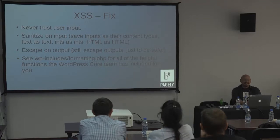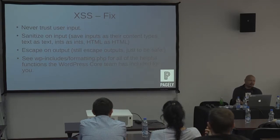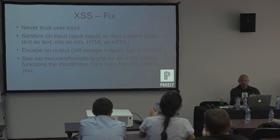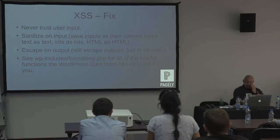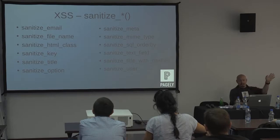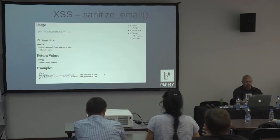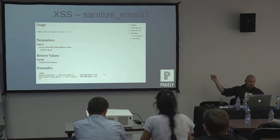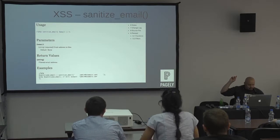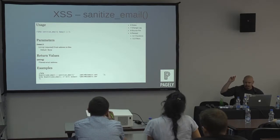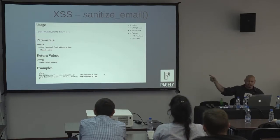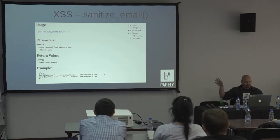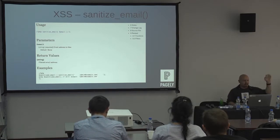You have to escape on output as well — it's better to be safe than sorry. WordPress has a fantastic suite of functions that help you escape on output. For example, sanitized_email validates that the return is a string that looks like a filtered email address. An email address has an RFC — an official format. You send it through sanitize_email and it validates it looks like an email address, not HTML or JavaScript.